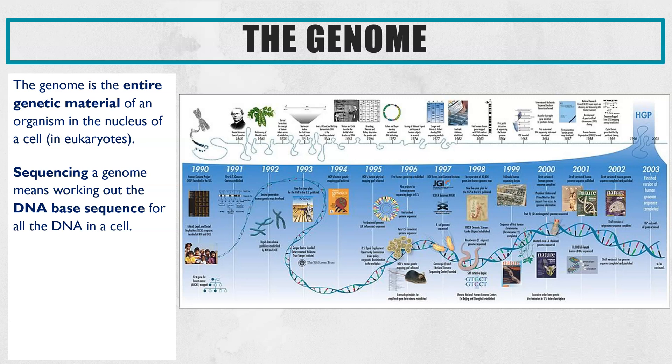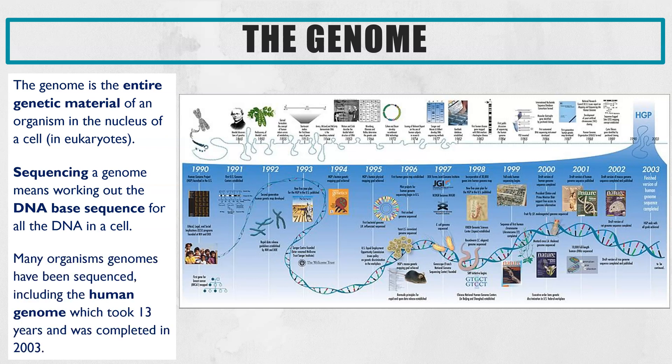Sequencing a genome means identifying the exact DNA base sequence for the entire genome, or for the entire DNA of that cell. Although we say 'cell', it's worth bearing in mind that for every single cell in one organism it will contain the same DNA, except for red blood cells which don't have a nucleus, and gametes which have half the amount of DNA — but it'll still be the same DNA base sequence.